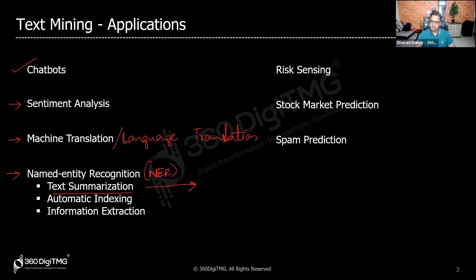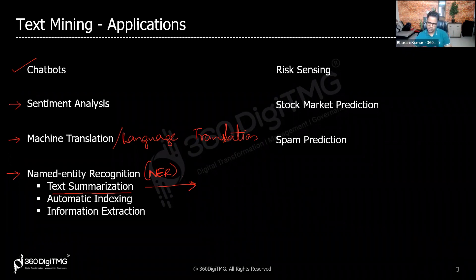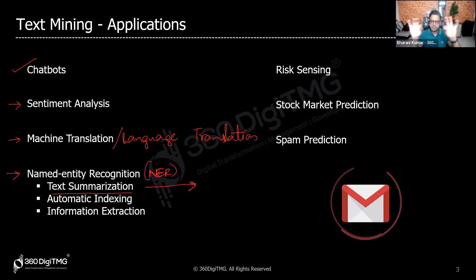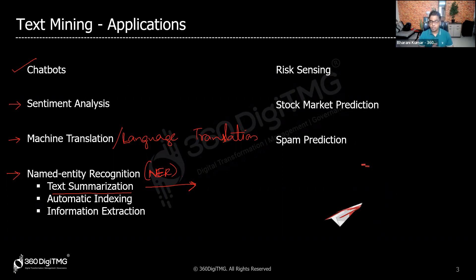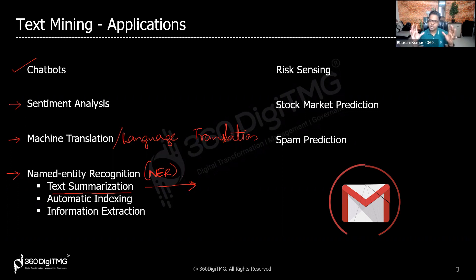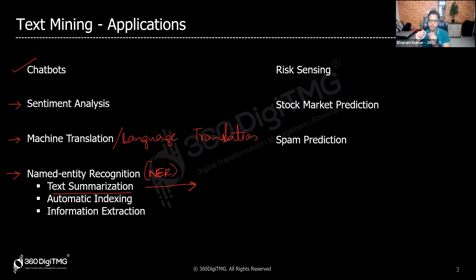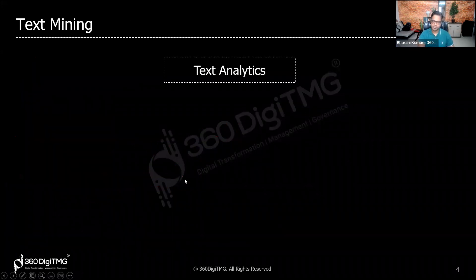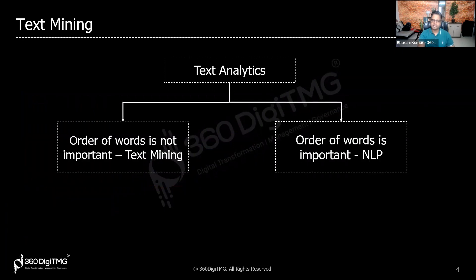You can also analyze news articles and, based on whether the sentiment is positive, negative, or neutral, predict whether a stock value will move up or down — that's stock market prediction. Another application is spam detection: reading email subjects, bodies, and signatures to classify emails as spam or ham — ham meaning not spam.